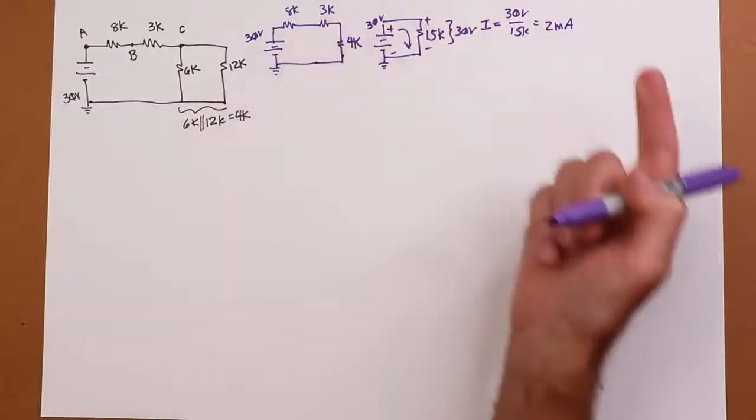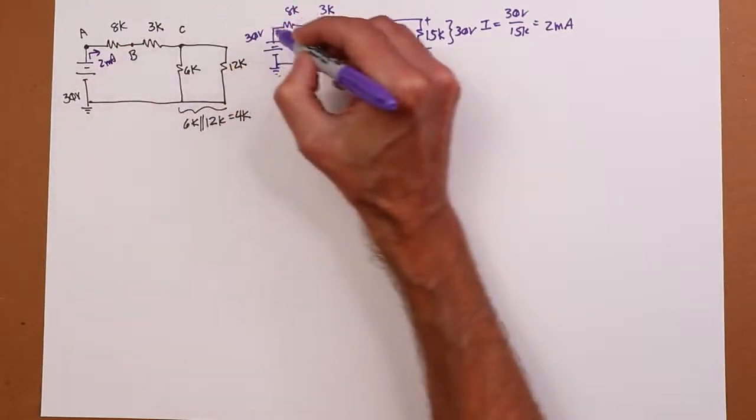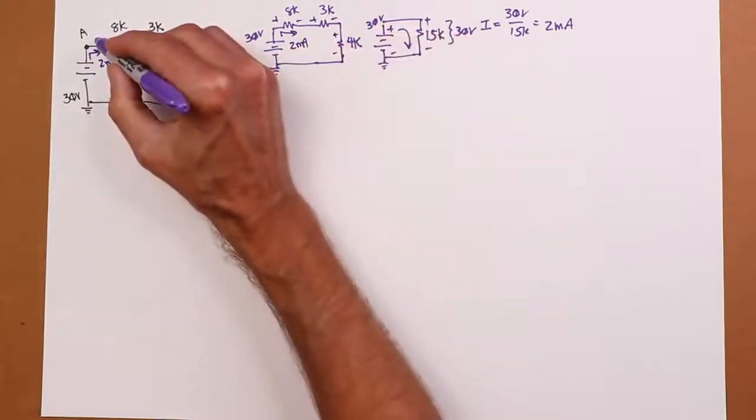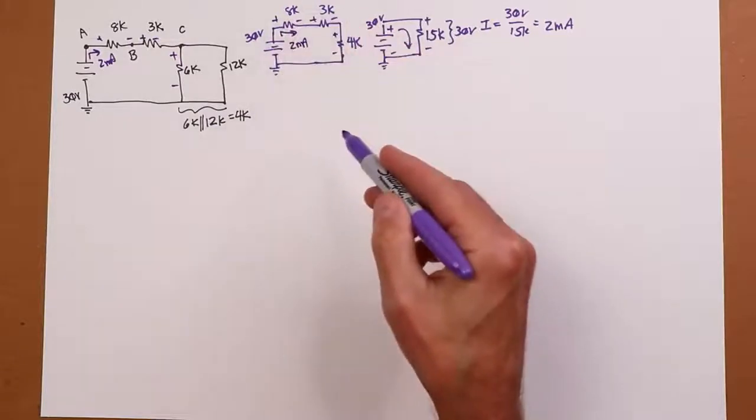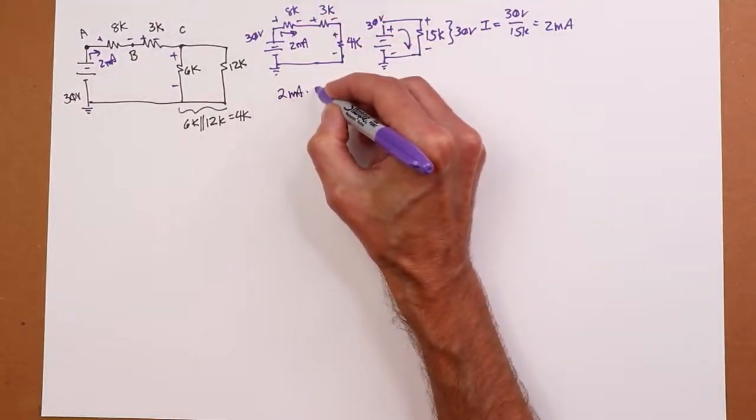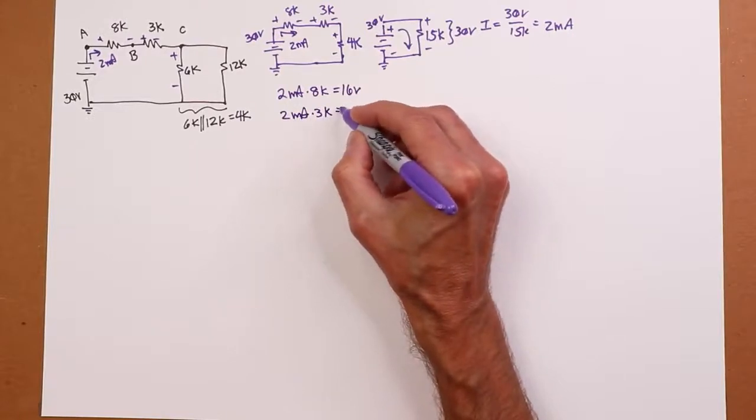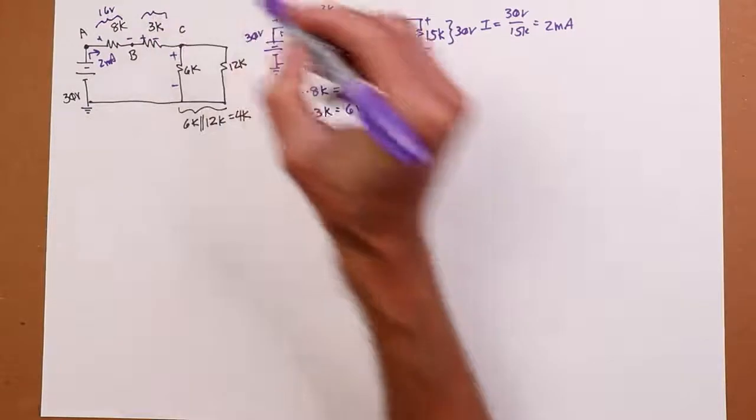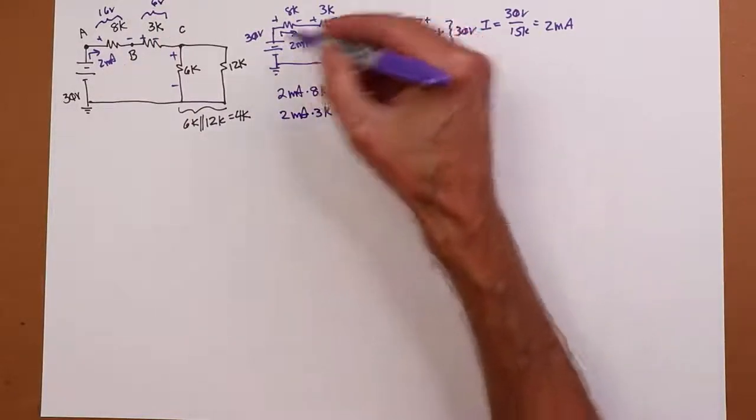Now I can take that 2 milliamps and return it back into the original circuit. Or the halfway circuit, if you prefer. Because I know that's the current coming out of my source. That's 2 milliamps. This is 2 milliamps. And I can now start putting down polarities for things. We're back in the original circuit. Well, I can use Ohm's law on this. Two mils times the 8K. So the drop across that first resistor, two mils times 8K, the mils and the Ks cancel. That's got to be 16 volts. Drop across the 3K, similar. That's got to be 6 volts.